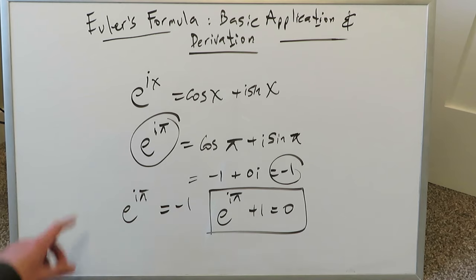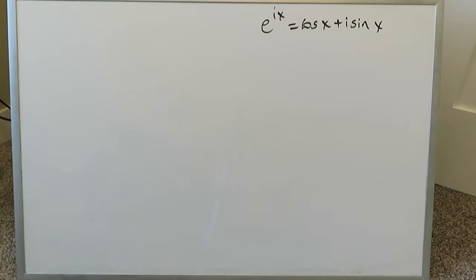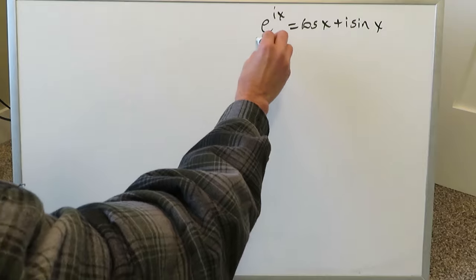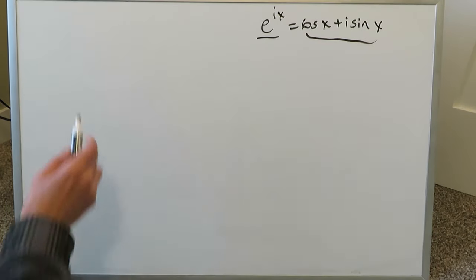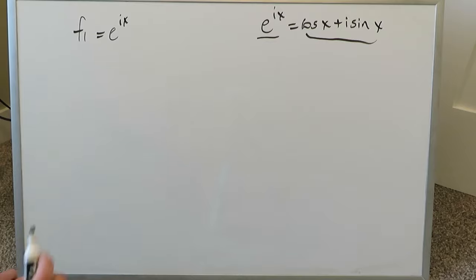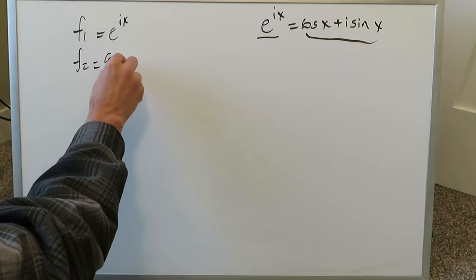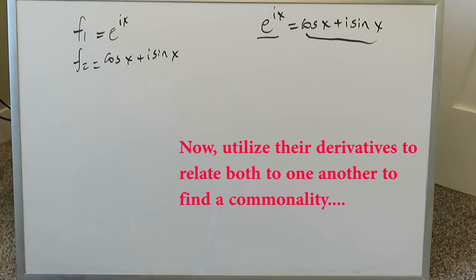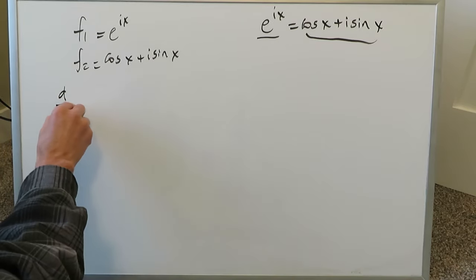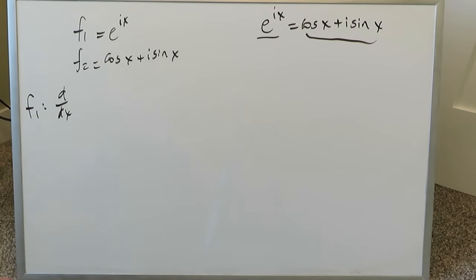Let's get into the derivation of this formula. The derivation of Euler's formula will consume the remainder of this video. There are a variety of perspectives, but since we're looking at calculus videos, we'll use a calculus perspective. Remember, we're not proving it — we're deriving this formula. The procedure starts with making two assumptions: that there are two functions. One function, f1, is equal to e to the power of ix. The other function, f2, is equal to cosine x plus i sine x.